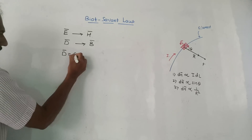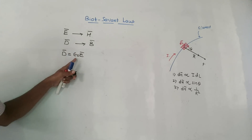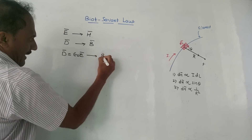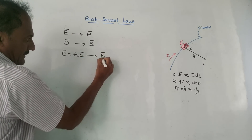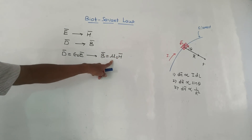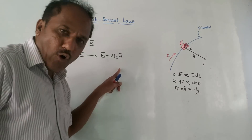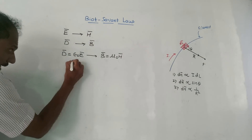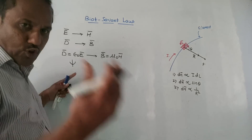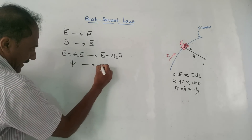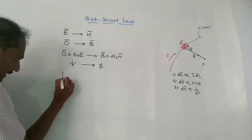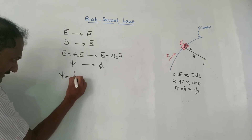We have the relation D bar equals epsilon-zero times E bar, where epsilon-zero is permittivity of free space. The similar formula in magnetic field is B bar equals mu-zero times H bar, where mu-zero is called permeability of free space. Then electric flux is denoted by psi, and similarly magnetic flux is denoted by phi.